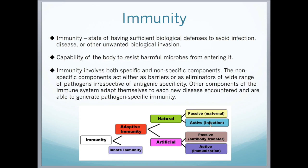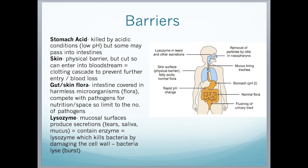Passive immunity applies to pregnant women or breastfeeding mothers who pass on antibodies to the infant through breast milk or the placenta. Active immunity refers to vaccinations. The body has several barriers. First, stomach acid — if we ingest anything, it can be quickly killed off by the low pH. Some pathogens could still pass into the intestines, but it is covered in harmless microorganisms called flora which compete with pathogens for nutrition, limiting the number of pathogens that can grow there.